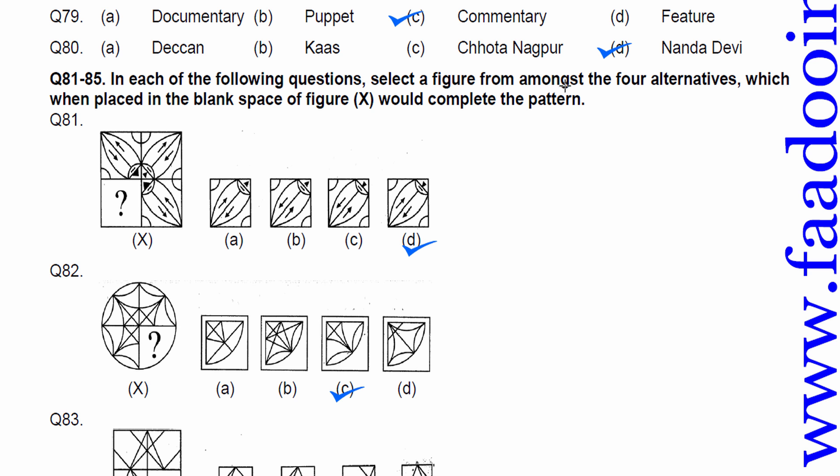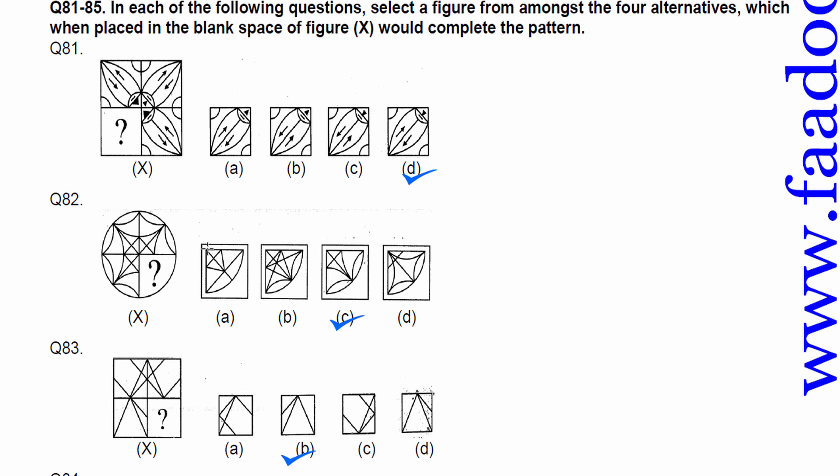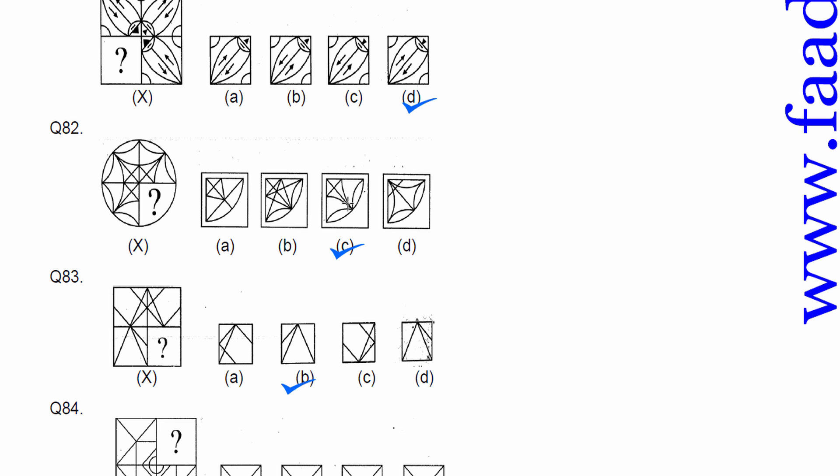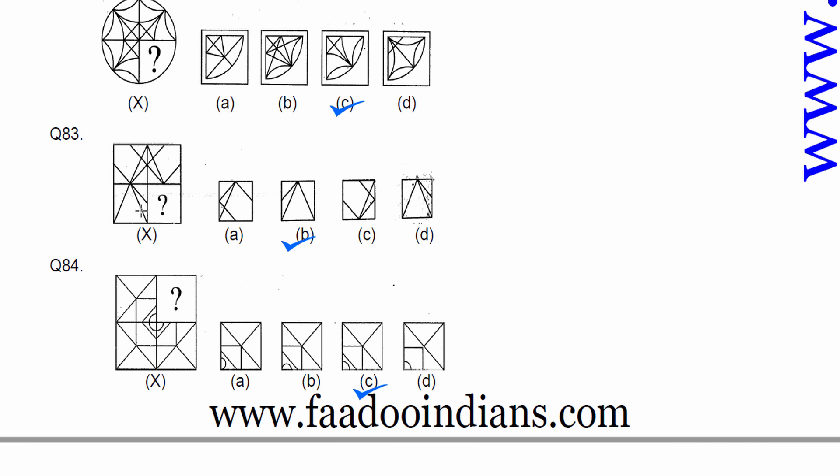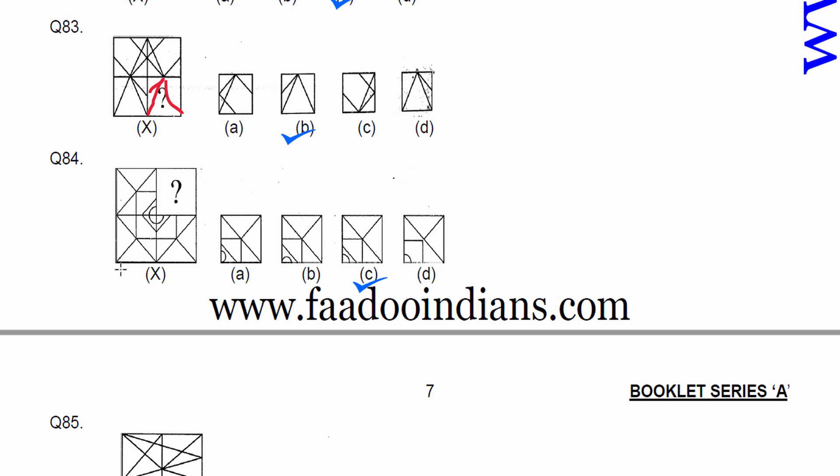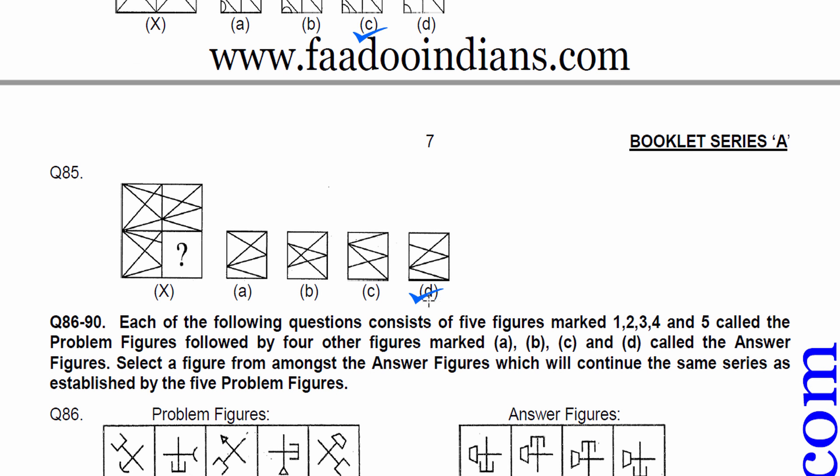81-85. In each of the following questions, select a figure from amongst four alternatives, which when placed in the blank space of the figure X would complete the pattern. You have to fill it. It is a common sense and it comes with practice. Therefore, D fits very best because arrows are in opposite directions. First clue you can get from there and other by matching the other arrow. This is how you can do such problems. Now, similarly 83, just put these things on the blank part. If it completes, it is the answer. Here, you can match lines. C fits exactly the same. Let's try it. Match it as C. Yes, it fills correctly. Now 84 is again the same. Complete the circle first, then the rectangle, then the lines. 85 again. Adjust a copy of the left-hand side to the right-hand side.